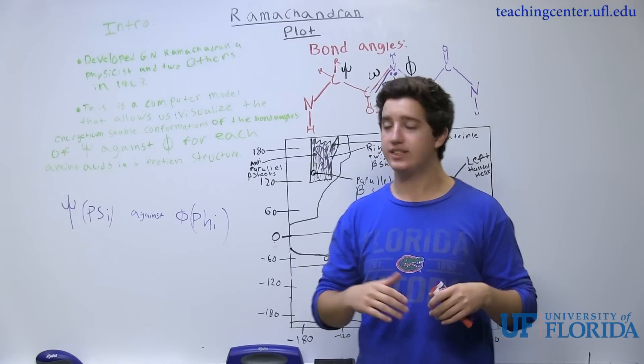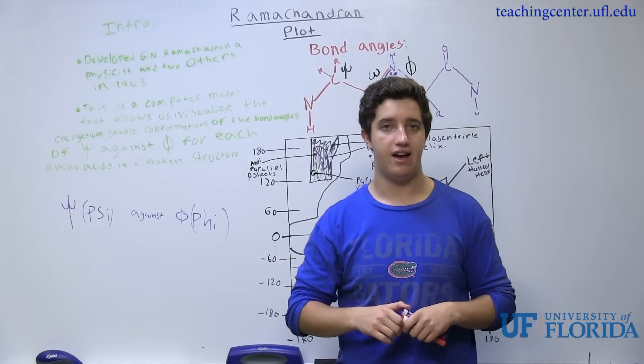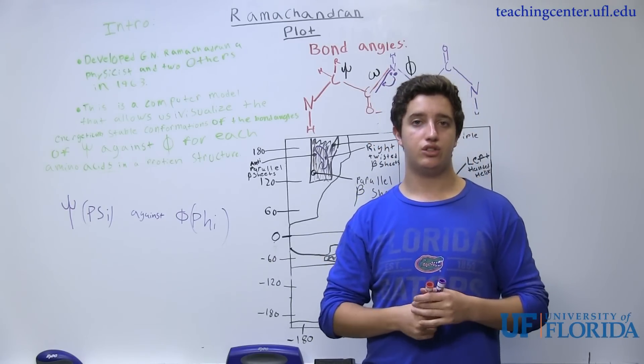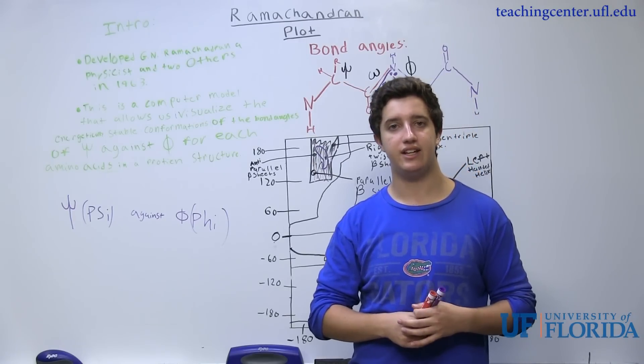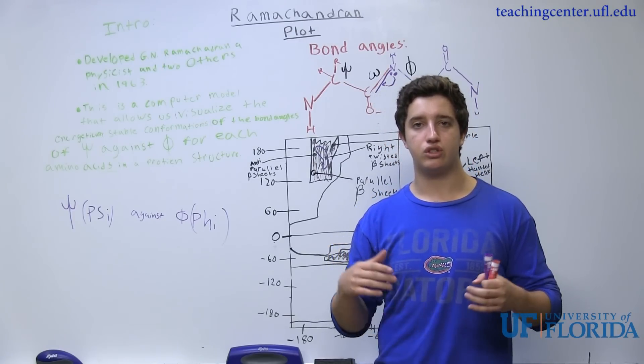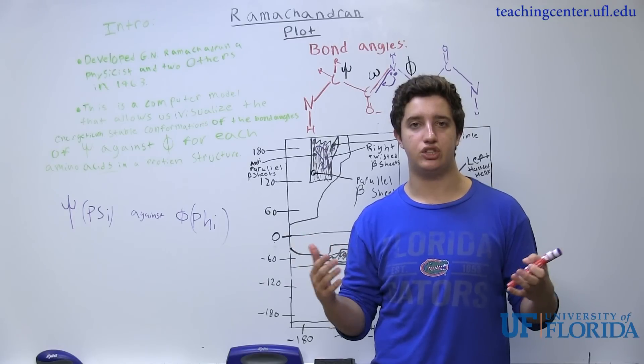However, the psi and the phi are mostly single bonds. So these single bonds are free to rotate. And this rotation is going to give the structure such as the alpha helix and the beta sheet.